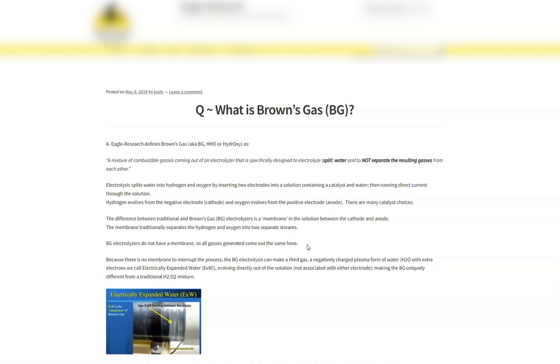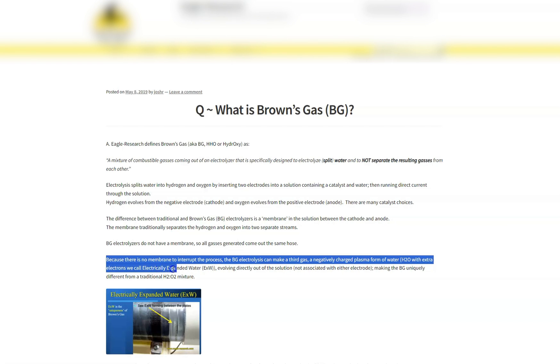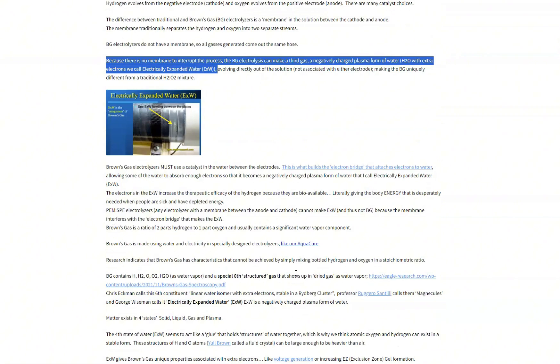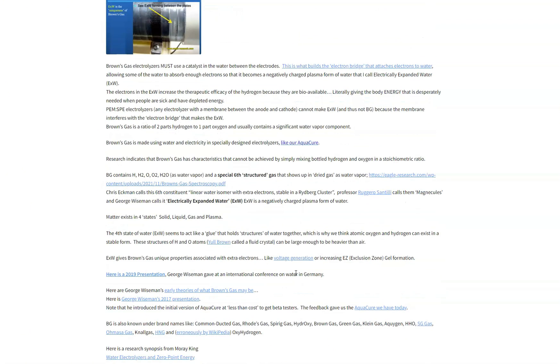What we're trying to do in this series of videos is demonstrate that Brown's gas created from a PEM electrolyzer is the same gas that's generated from an alkaline electrolyzer. Because no membrane interrupts the process, the BG electrolysis can make a third gas, negatively charged plasma form of water called electrically expanded water. It's saying that only alkaline electrolysis can create this electrically expanded water.